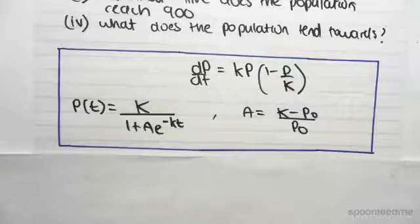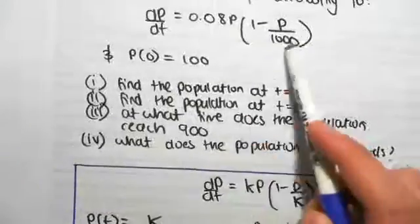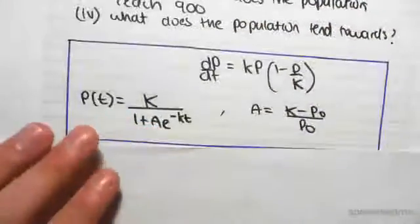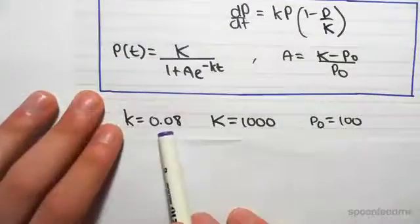Doing these questions is actually kind of simple. You just have to get your differential equation in this form. Luckily, ours is already in that form. And we just extract the variables and look at the solution. So just to show you, we know that little k is 0.08.